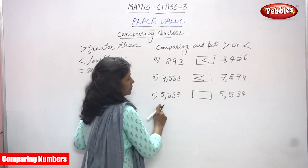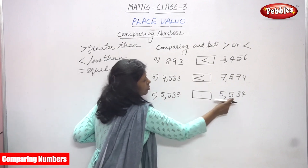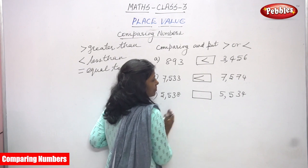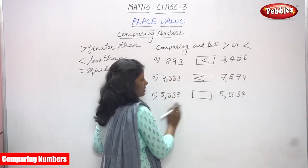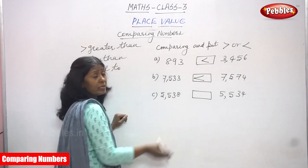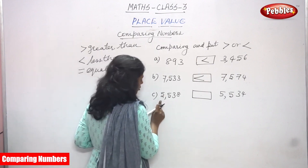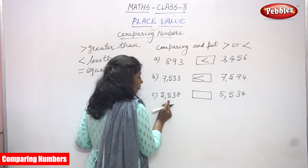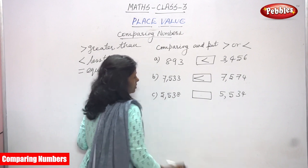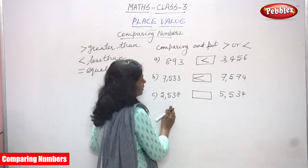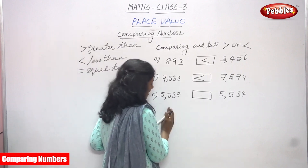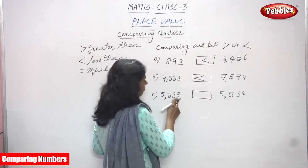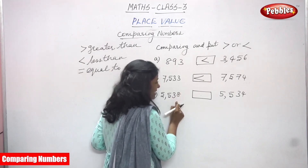The next one — again both are four digit numbers. When you have the same number of digits, you have to compare each and every digit. First digit is thousands — here five thousand, and here also five thousand. Next, hundreds — five hundred here, five hundred here. Both are the same. Next, tens place — three tens here, three tens here. Both are same. Finally we check ones — here eight, and here four.